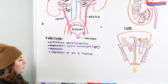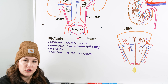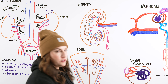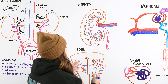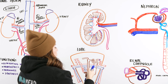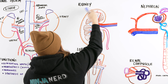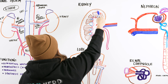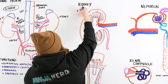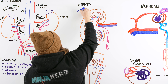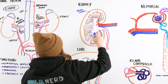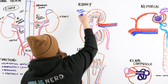Now let's look at a cross-section of the kidney and identify all the structures within it. When we cut the kidney in half and look from the side, the first region is the outer area — usually lighter in color — which is our renal cortex. The inner area, with all the layers inside, is our renal medulla.